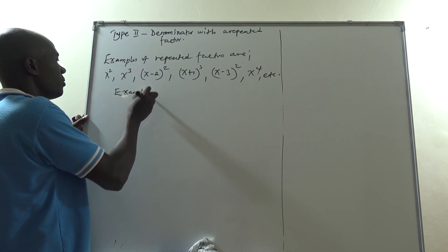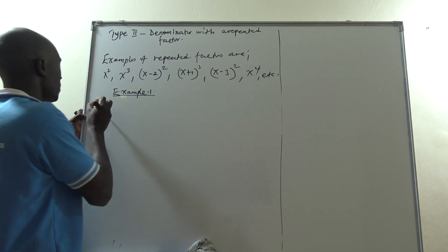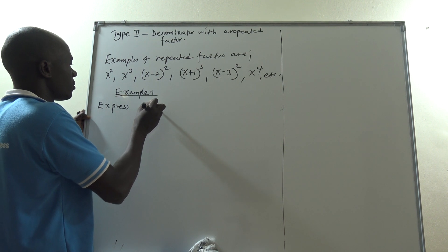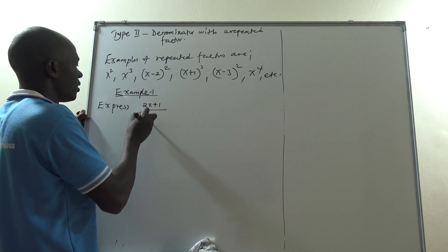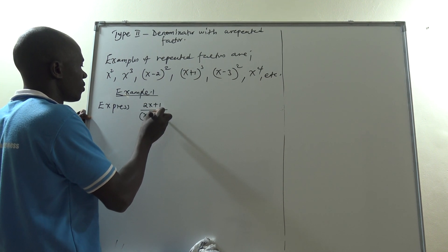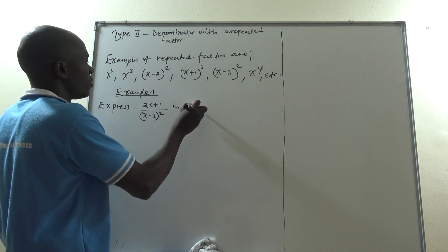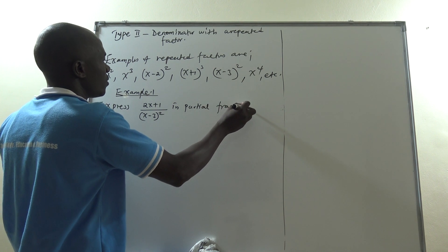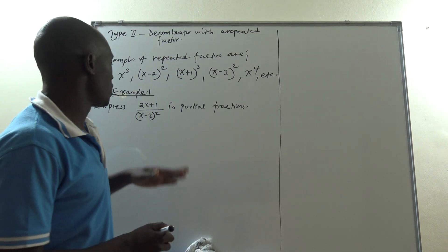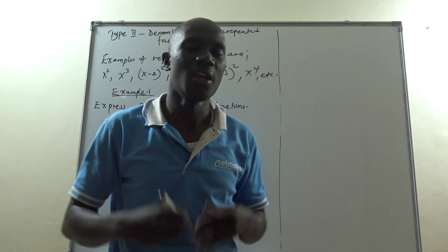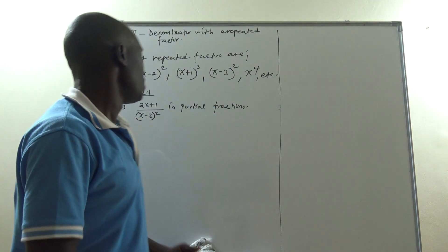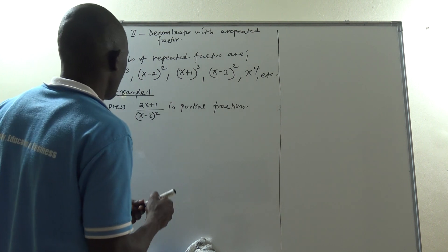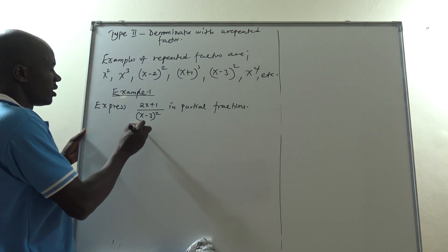We are starting with Example 1. We want to express (2x plus 1) all over (x minus 3) squared as a partial fraction. You can see that (x minus 3) is appearing 2 times.